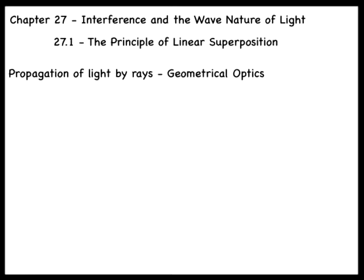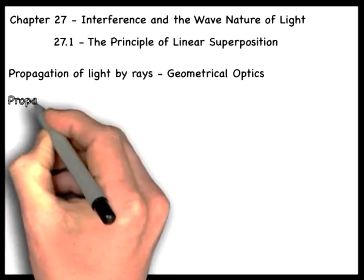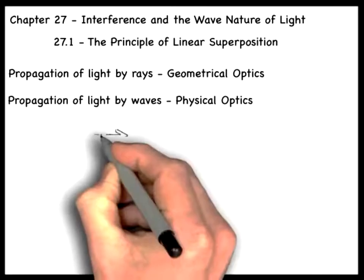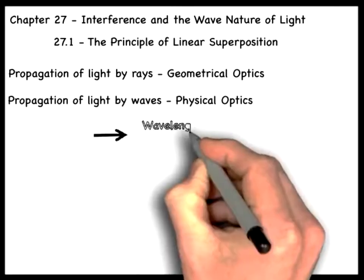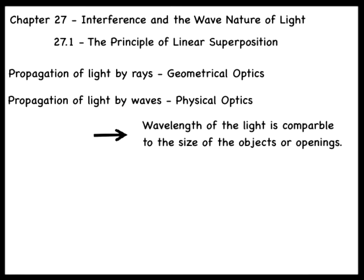However, in Chapter 24 we showed that electromagnetic waves move at the speed of light, and light itself is therefore an electromagnetic wave. Thus, light should exhibit wave-like properties. In this chapter, we will see that light does exactly this when it passes around objects or through openings with dimensions that are comparable to the wavelength of the light. The study of the wave properties of light is known as physical optics.